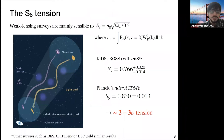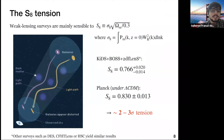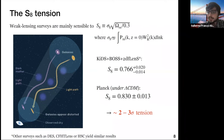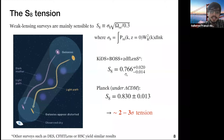Let me start talking about the S8 tension, which arises from weak lensing surveys. These surveys measure the distorted images of galaxies due to the presence of large clumps of matter along the line of sight, allowing an estimate of how matter is distributed in the universe. This is captured by the S8 parameter, given by a combination of Ω_m — the matter abundance — and σ_8, which gives the amplitude of matter fluctuations on a scale of 8 Mpc. The direct determination by weak lensing surveys gives a value that is 2 to 3 sigma smaller than what is indirectly obtained from Planck assuming Lambda CDM.